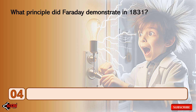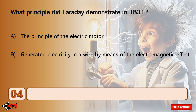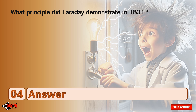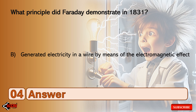What principle did Faraday demonstrate in 1831? The principle of the electric motor, generated electricity in a wire by means of the electromagnetic effect, or the principle of alternating current? The answer is generated electricity in a wire by means of the electromagnetic effect.